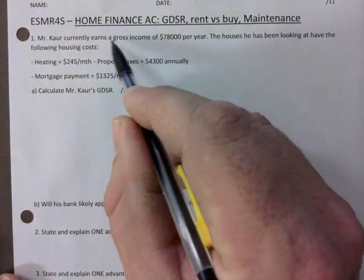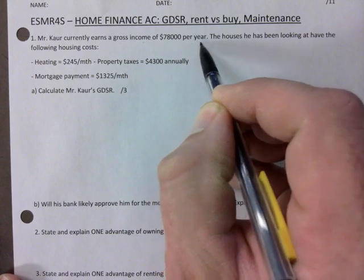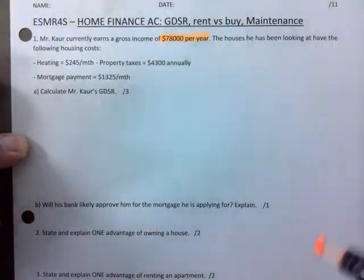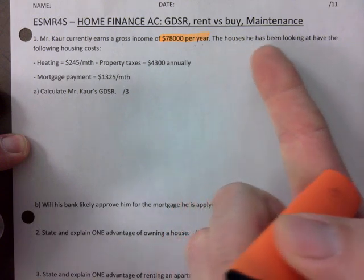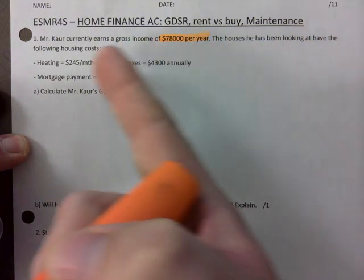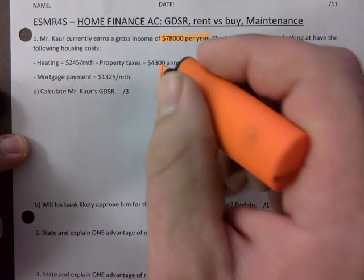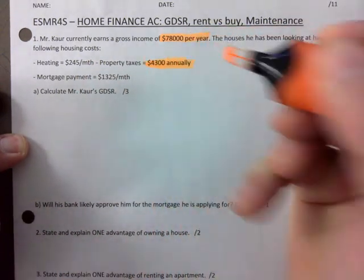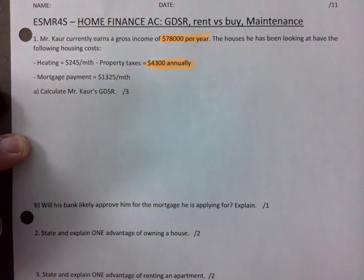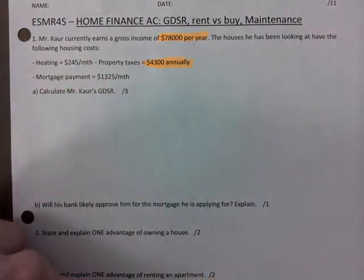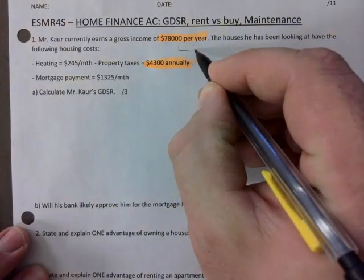So Mr. Kaur earns a gross income of $78,000 per year. I will highlight in orange. The houses he's been looking at have the following costs. Heating is already on a monthly basis. Property taxes is annually, so I'm gonna highlight things that are not in monthly amounts. The mortgage and heating is already there.